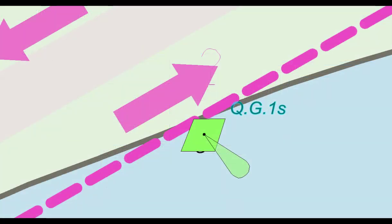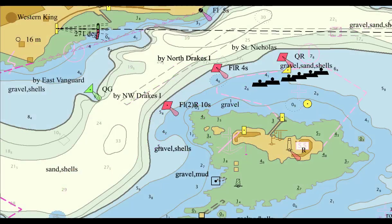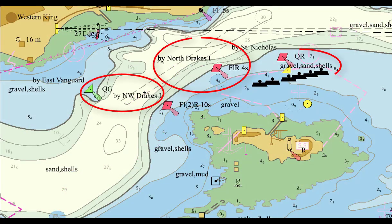S100 also allows for the cartographic placement of text, which gives users the ability to control the location of text, which attribute is to be displayed, and the minimum scale at which the text will display, thus allowing experienced cartographers to alleviate some clutter that can be seen on an ECDIS.